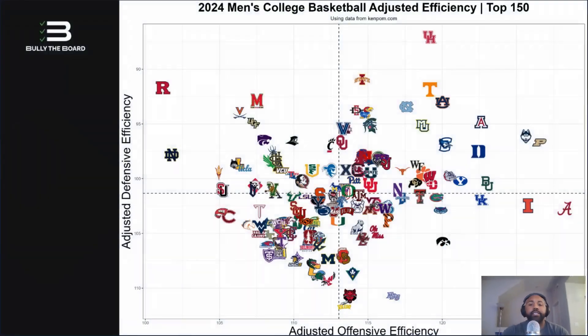Hey everyone and welcome to the Bully the Board channel. We are discussing the top 25 matchups for Saturday, March 2nd in college basketball. We're going to break down some of these games using the KenPom predictions, picks and analysis to spit out what we're thinking for some good bets and hopefully make you more informed. We're going to take some action on some of these games. So without further ado, let's get started.